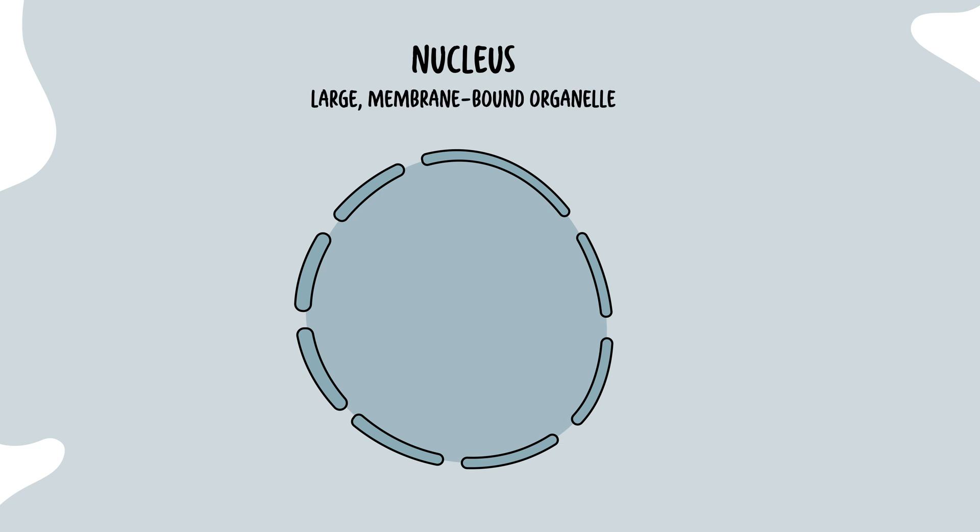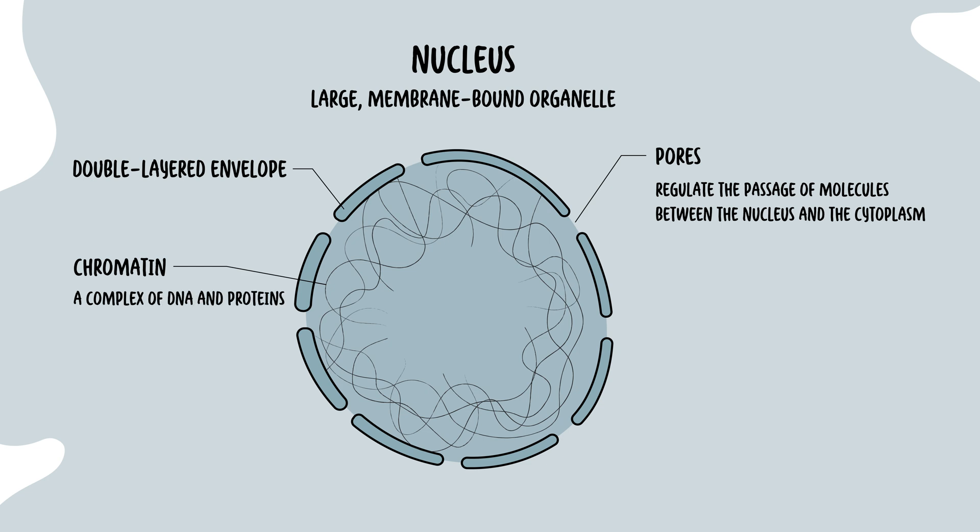As mentioned, the cytoplasm contains a lot of the cell's organelles. Let's look at each of these in a bit more detail, beginning with the nucleus. The nucleus is a large membrane-bound organelle surrounded by a double-layered nuclear envelope that contains nuclear pores. These pores regulate the passage of molecules between the nucleus and the cytoplasm. Inside the nucleus contains chromatin, essentially your DNA with protein, and also, it contains what's called the nucleoli, where ribosomal RNA synthesis occurs.